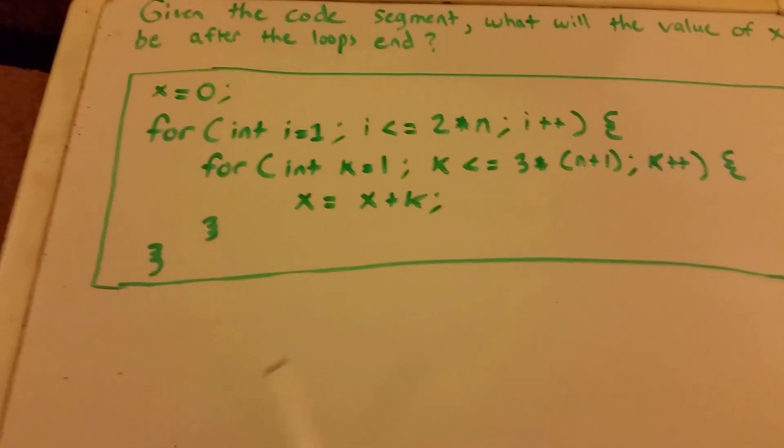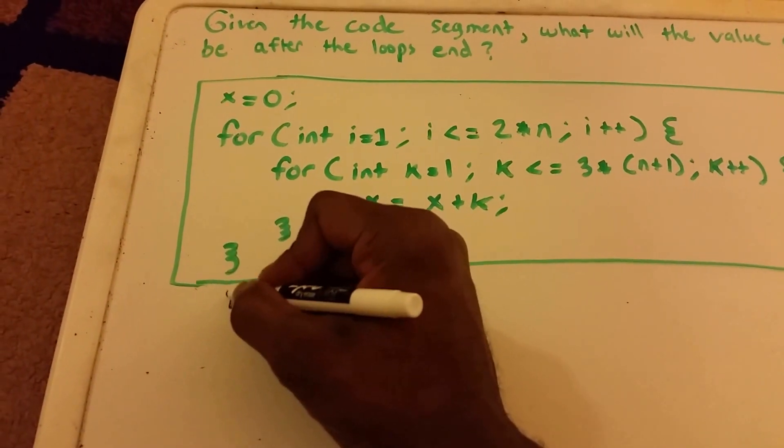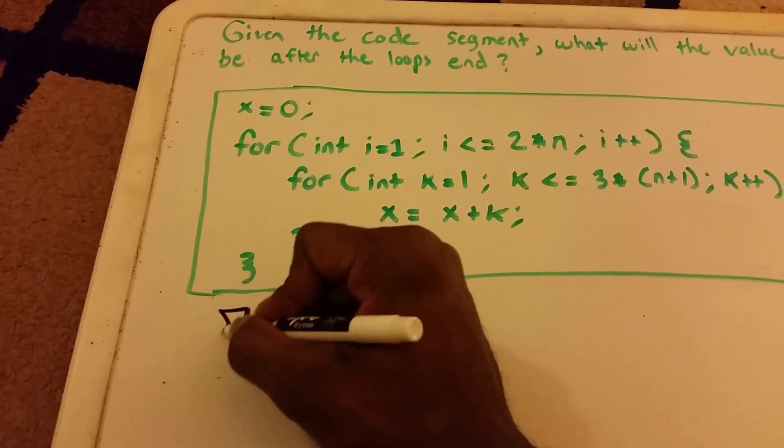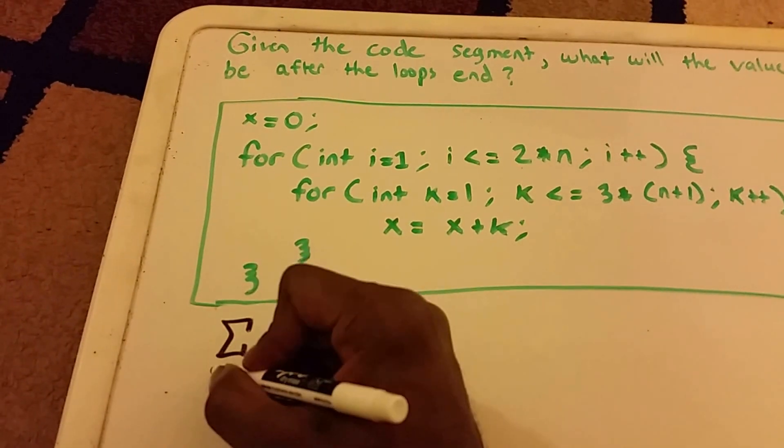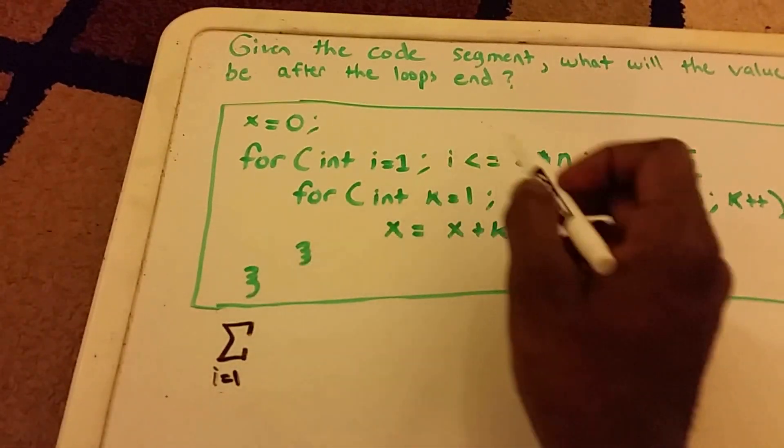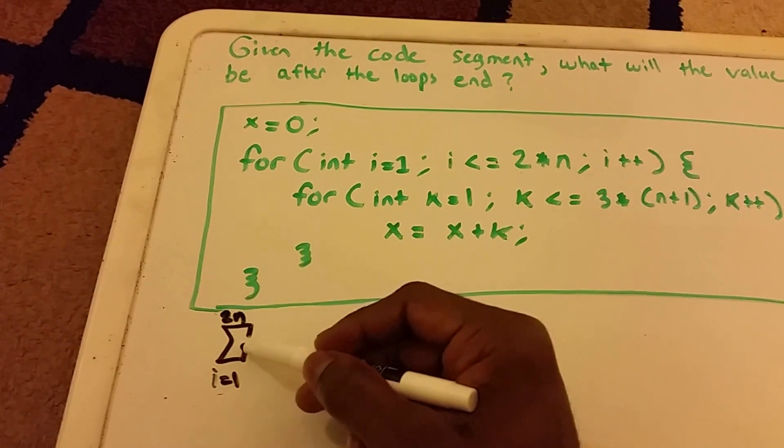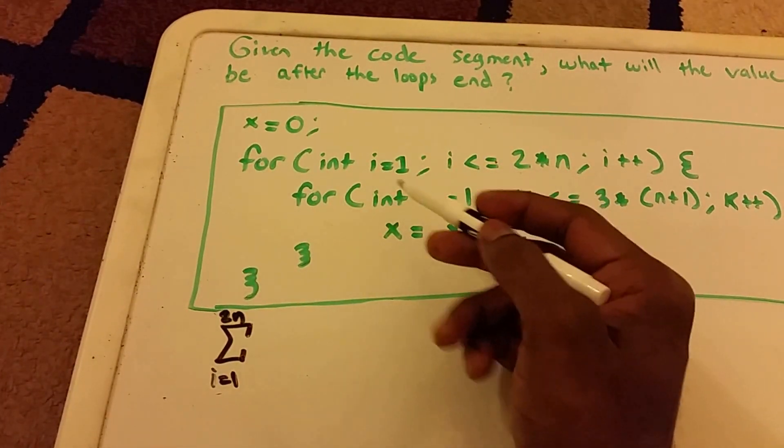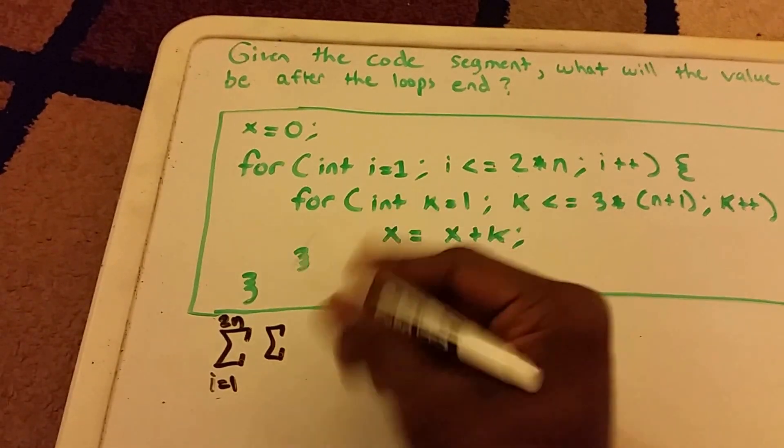So what we have to do is we have to set this up in a more mathematical form using summations to try to solve for it. Try to solve for x. So the first for loop runs from i equals one to two times n, and then within that loop is another loop, so we have another summation. And it runs from k equals one...